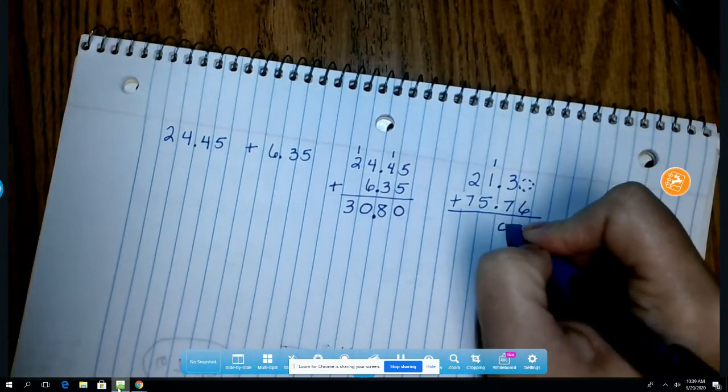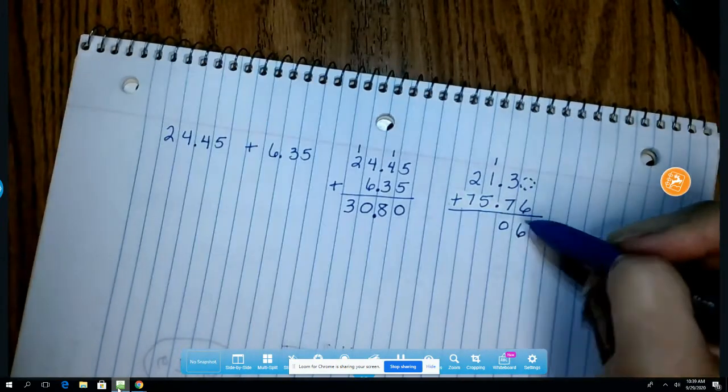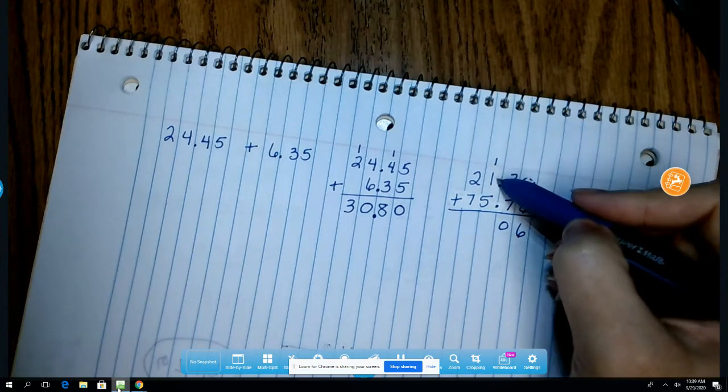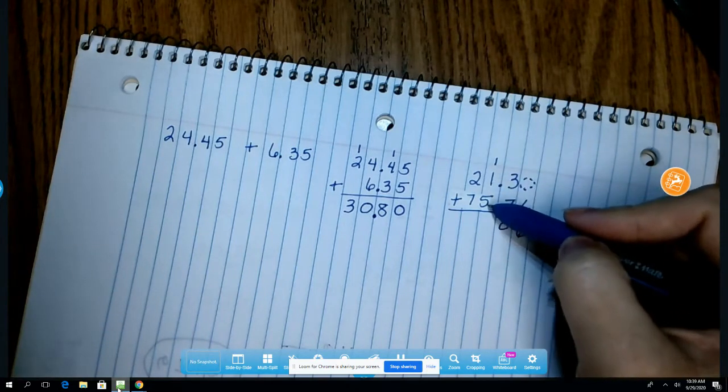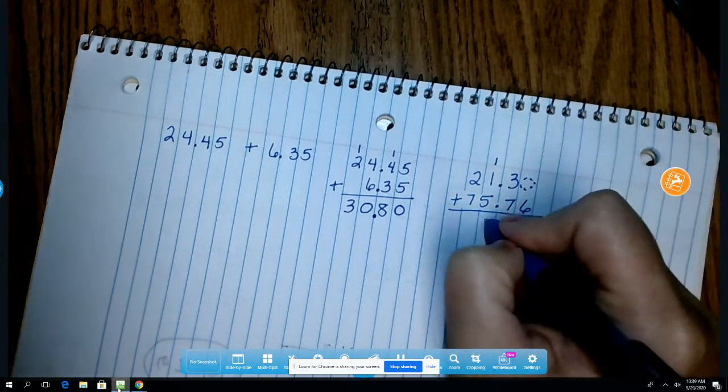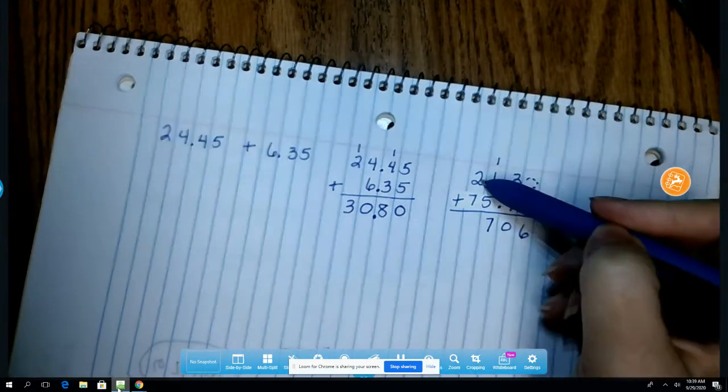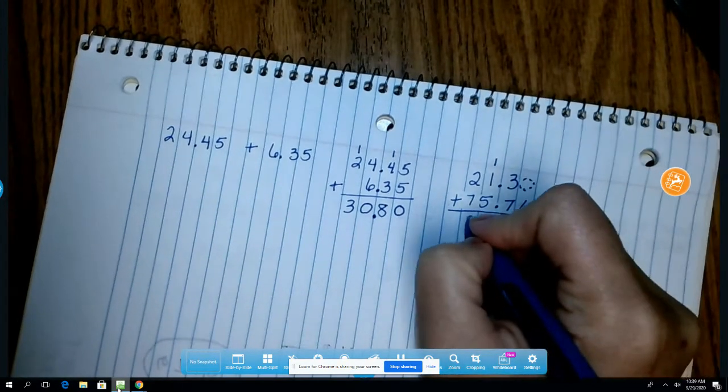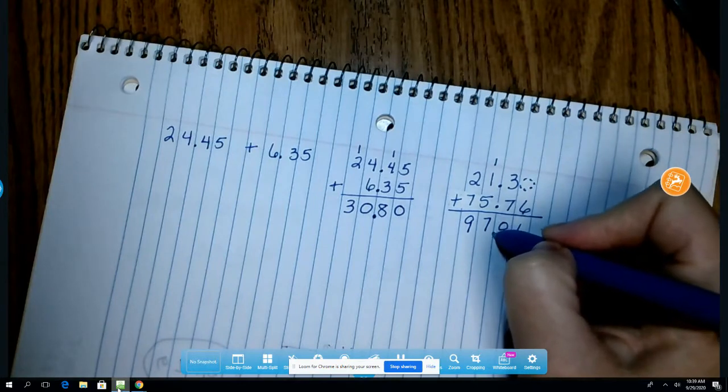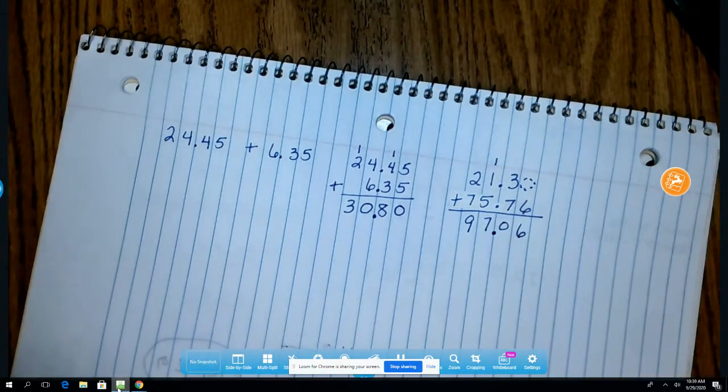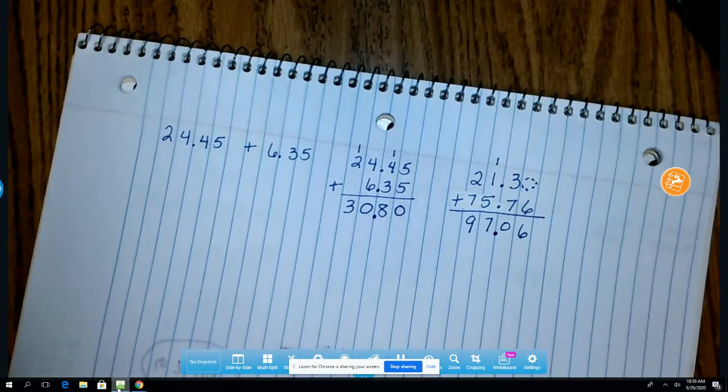So I had 10. There's my 10 right there. 1 plus 1 is 2. 2 plus 5 is 7. 2 plus 7 is 9. My decimal comes straight down. And I have my answer right there.